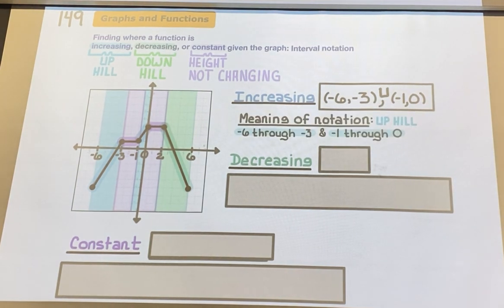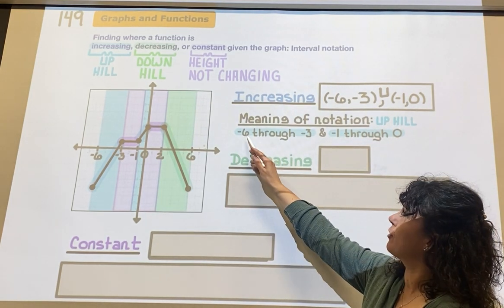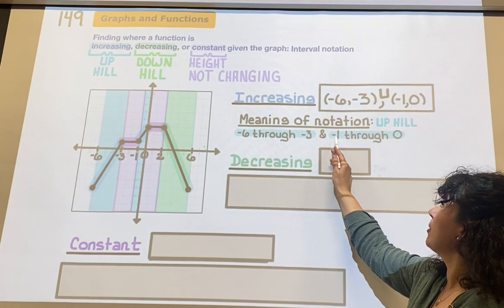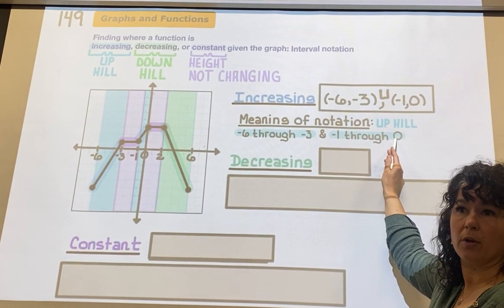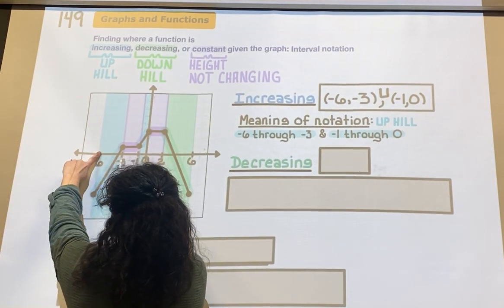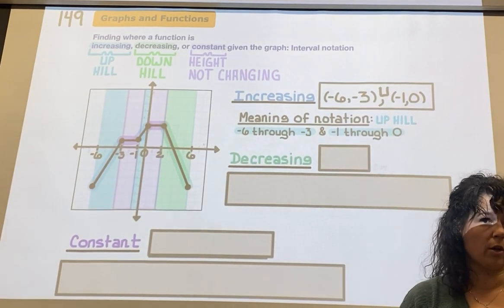So then for increasing, I just put a little bit of extra information. The meaning of what I have here is we're going uphill from negative 6 through negative 3 and from negative 1 through 0. Those aren't coordinates.